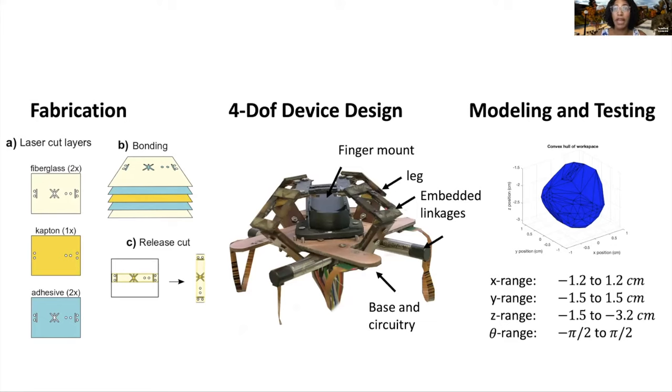The fabrication process allows for creating complex haptic technologies at low cost. Additionally, the origami fabrication process allows for incorporating sensing technology or embedded linkages.